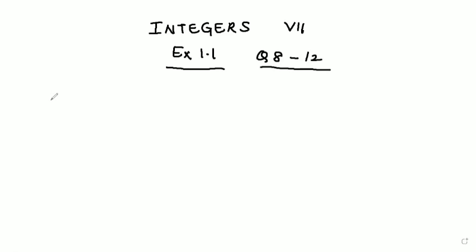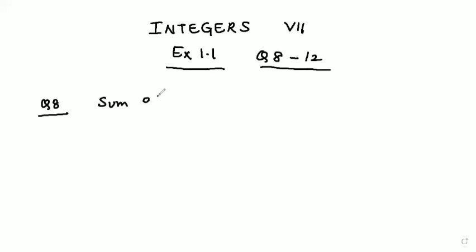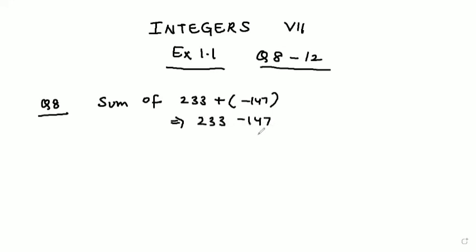Let's not waste further time — let's check out how to solve question number 8 to question number 12. Question number 8 says: from the sum of 233 and -147, subtract -284. First of all, we will find the sum of 233 plus (-147). In the next step, 233 minus 147 gives us 86.